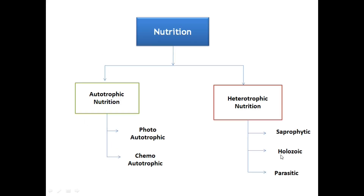Now coming to the types of nutrition. There are two types: autotrophic nutrition and heterotrophic nutrition. In autotrophic nutrition — auto means self, trophic means food — organisms prepare their own food. It is further classified into two types: photo-autotrophic and chemo-autotrophic.